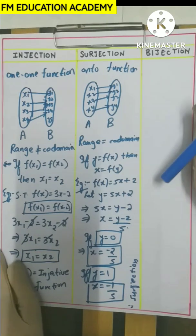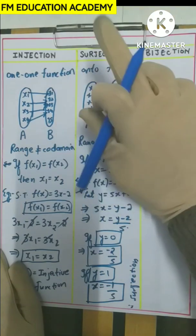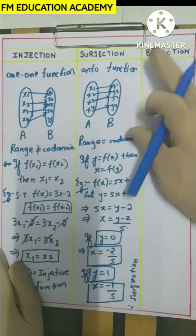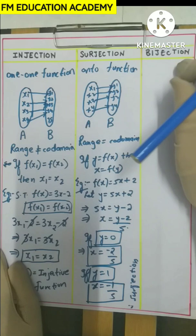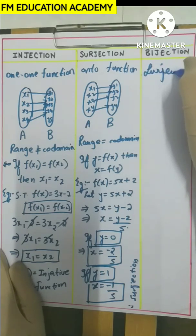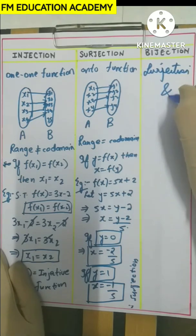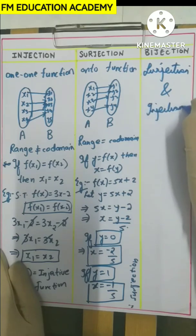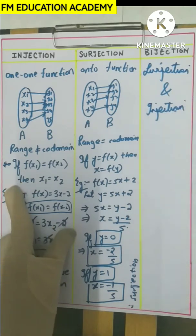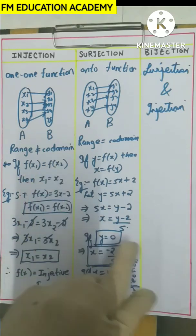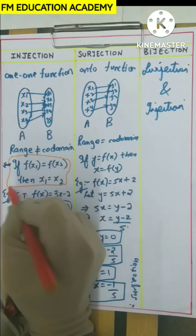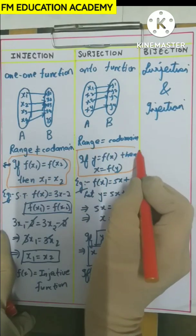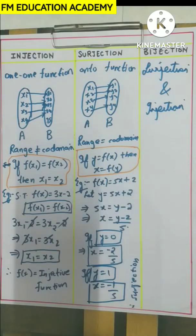Now, what is bijection? If a function satisfies both injection and surjection, then the function is said to be a bijection. By the prefix 'bi', we can understand it has two conditions. It must satisfy both: f(x1) = f(x2) implies x1 = x2 (injection), and for every y, there exists an x such that y = f(x) (surjection). Then it will be a bijection.